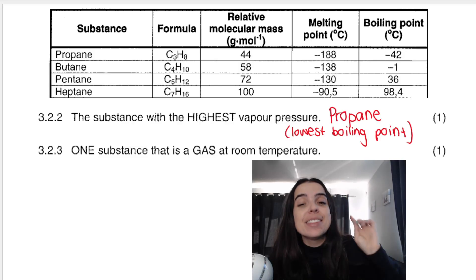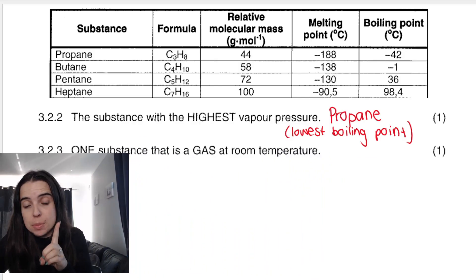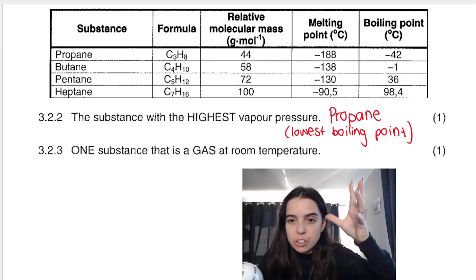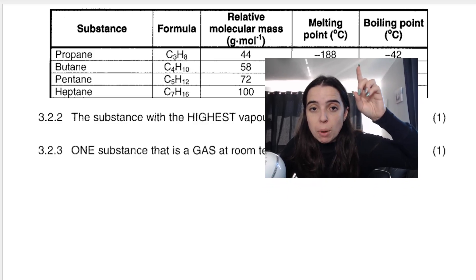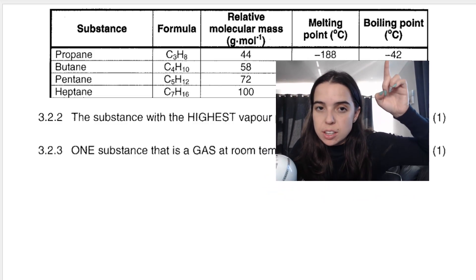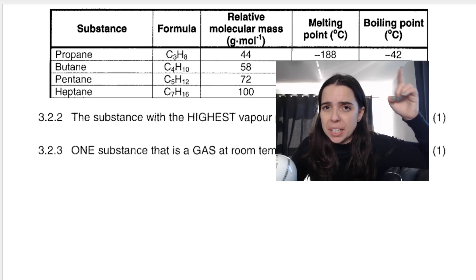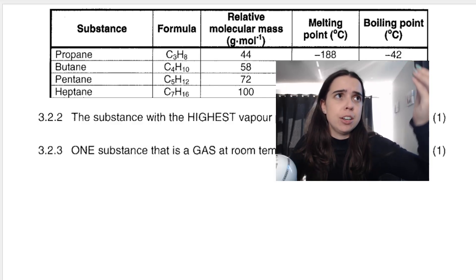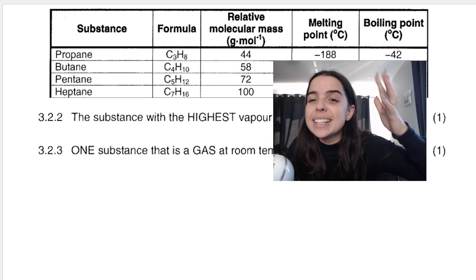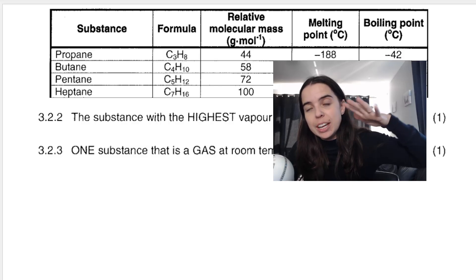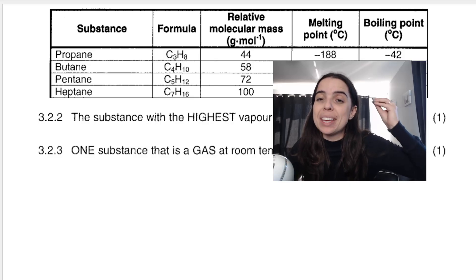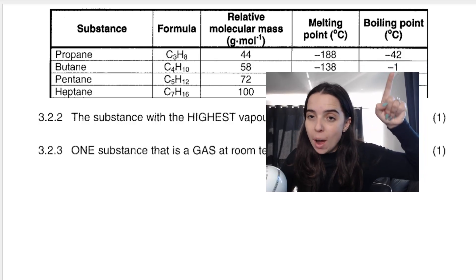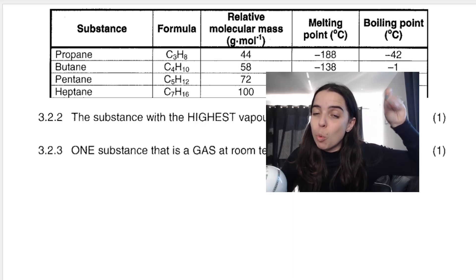And then name one substance that is a gas at room temperature. They just want us to name one substance, but it doesn't mean that there's only one substance in this table. And we already discussed this. Remember, room temperature is around 20 degrees or whatever, somewhere around there. So at boiling points, if you look at propane, negative 42 degrees Celsius already, this substance starts boiling, which means it turns into a gas at negative 42 degrees. So at negative 40 degrees, at negative 30 degrees, at zero degrees, 10 degrees, 20 degrees, room temperature, it'll still be a gas. So basically, if room temperature is above the boiling point, then the substance will be in its gaseous phase. So you can answer either propane or butane. Okay, because butane boils at negative one, and room temperature is above negative one. There we go.